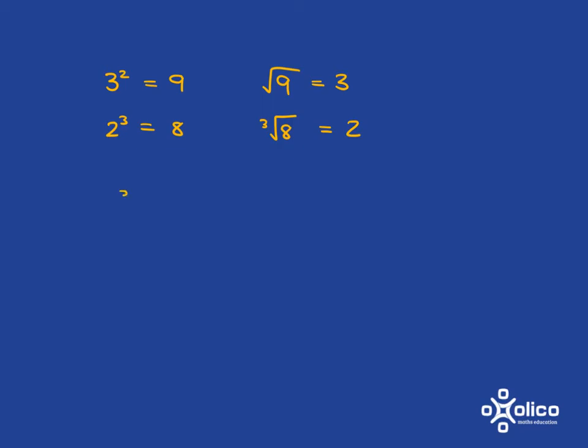We can extend this to fractions. For example, the cube root of 27 over 125. Hopefully you can easily see that's going to be 3 over 5. Why? Because 3 times 3 times 3 gets you back to 27, and 5 times 5 times 5 gets you back to 125.